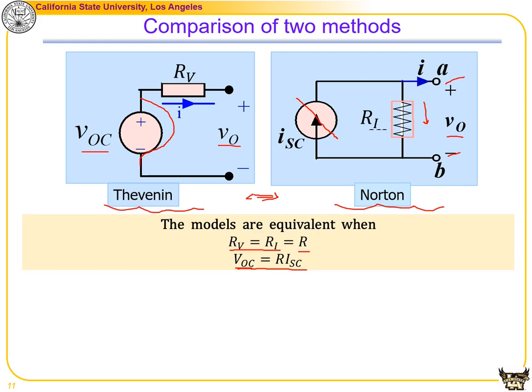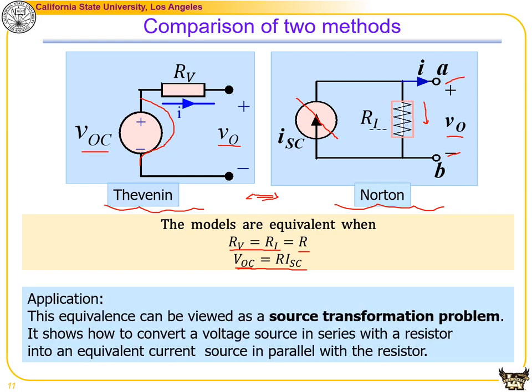This equivalence can be viewed as a source transformation problem. It shows how to convert a voltage source in series with a resistor into an equivalent current source in parallel with the resistor.